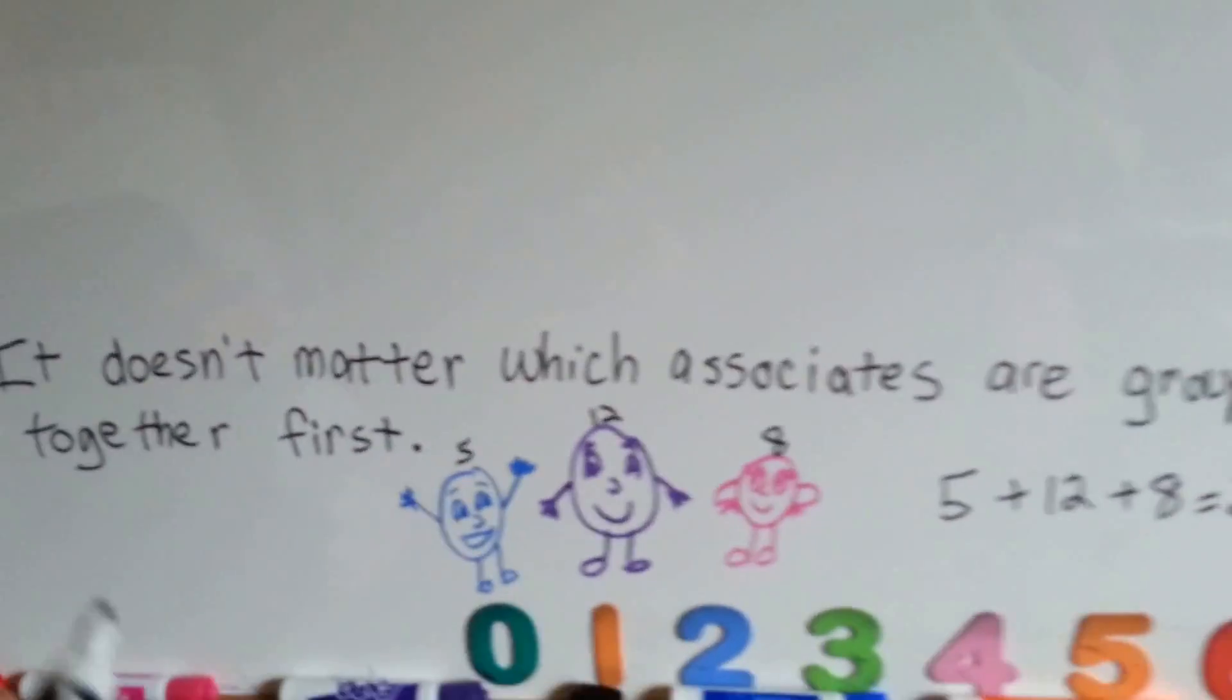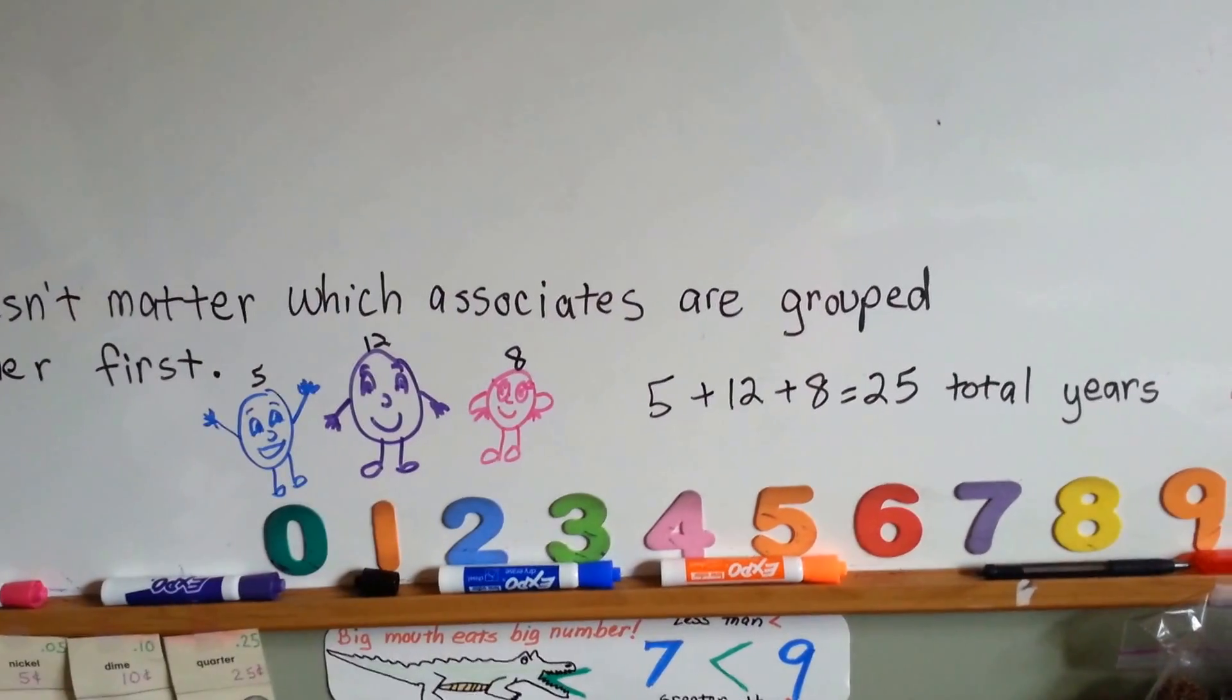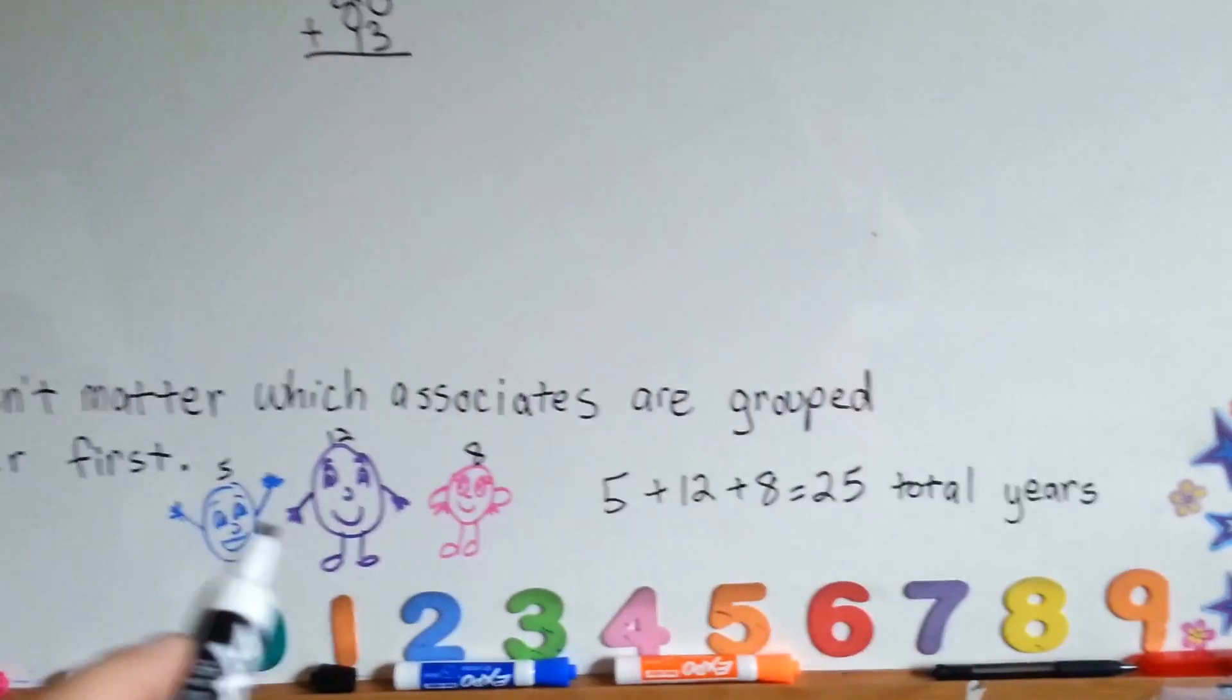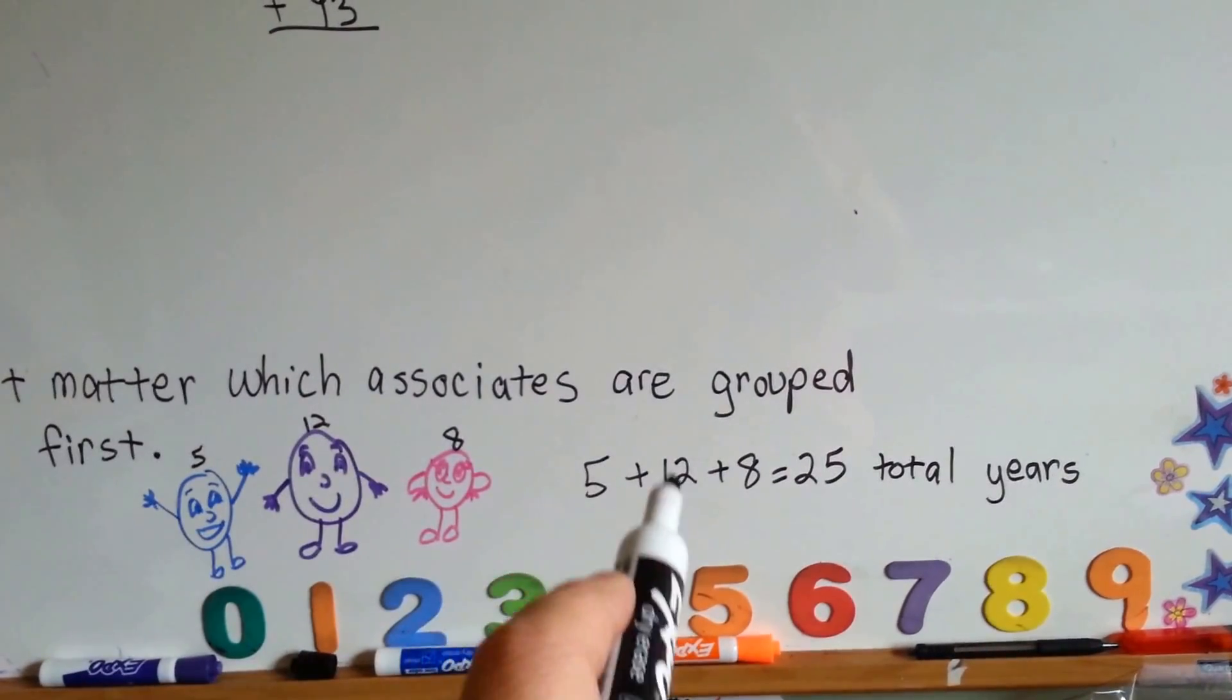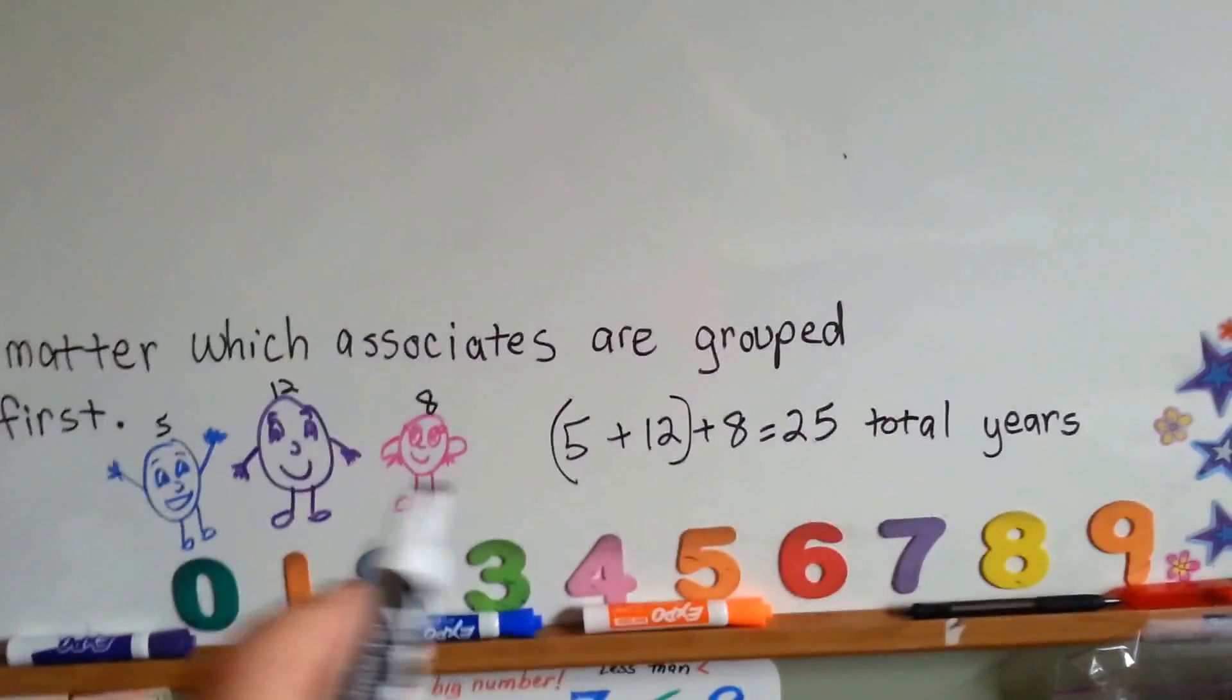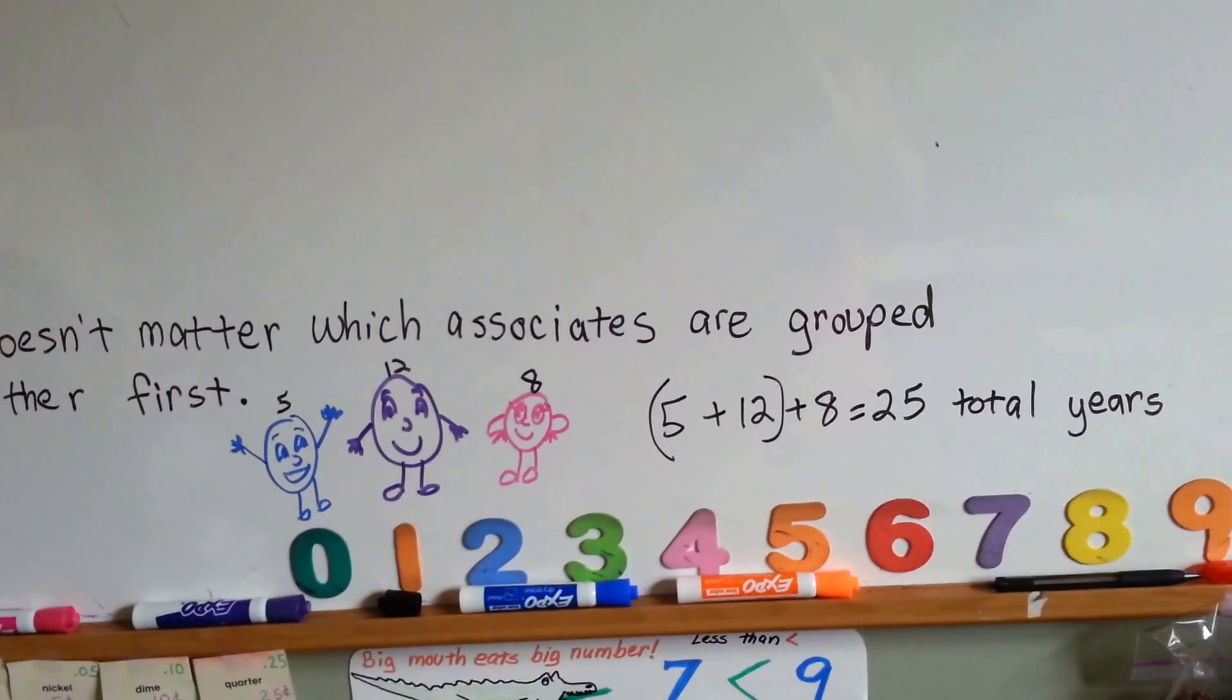So it doesn't matter which associates are grouped together first, because they're still going to equal the same thing. Up here, I had the pink one, then the purple one, and then the blue one. What if we had the blue one, then the purple one, then the pink one? Then it would be 5 plus 12 plus 8. See? It's still going to be 25 total years if you added all their years up together. It's just easier to add the pink and purple one together first to get 20, and then add the 5.